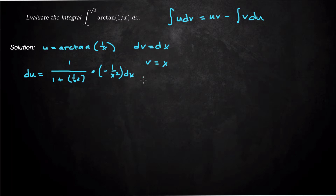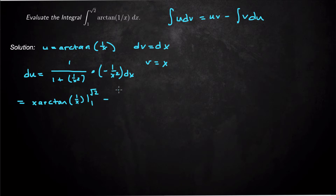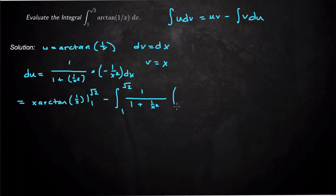Now I apply the formula: u·v minus the integral of v du. So this is going to be x·arctan(1 over x) evaluated from 1 to square root of 2, minus the integral from 1 to square root of 2 of 1 over (1 plus 1 over x²) times x dx.